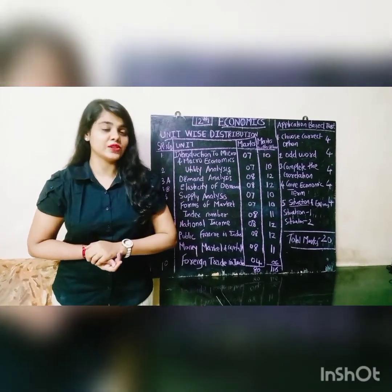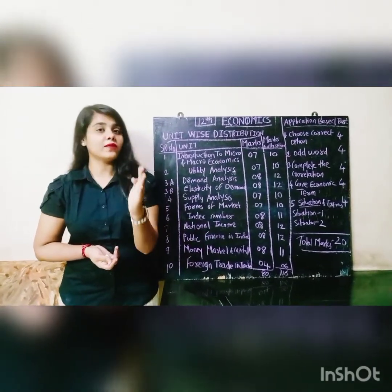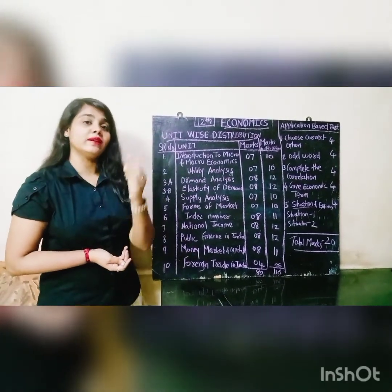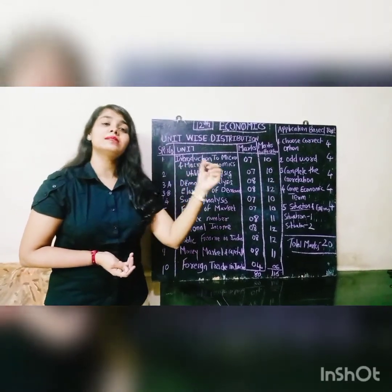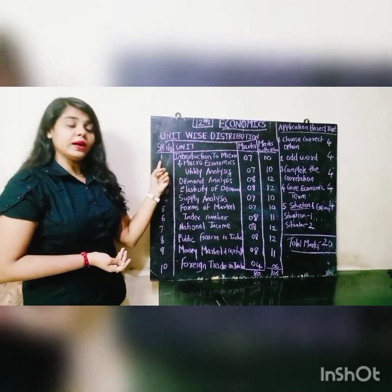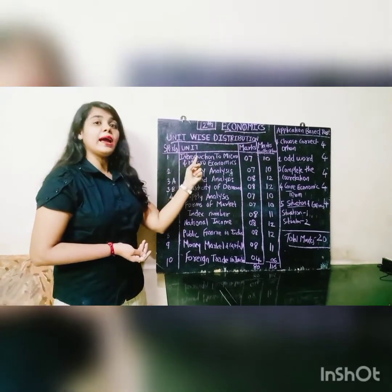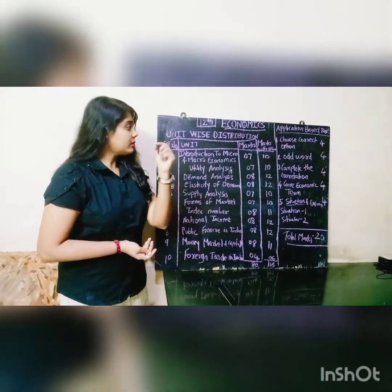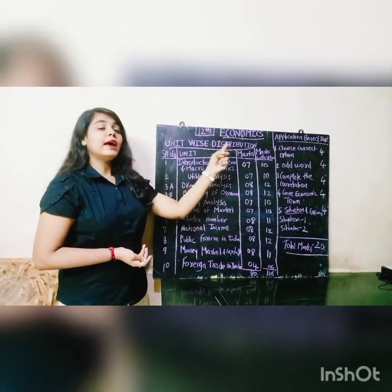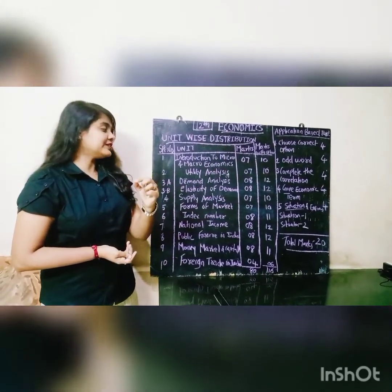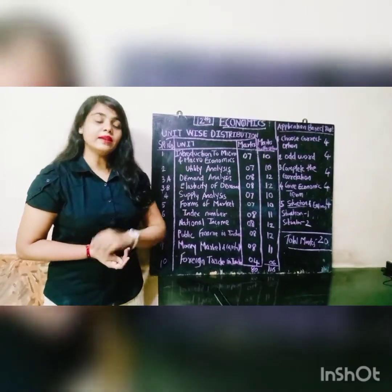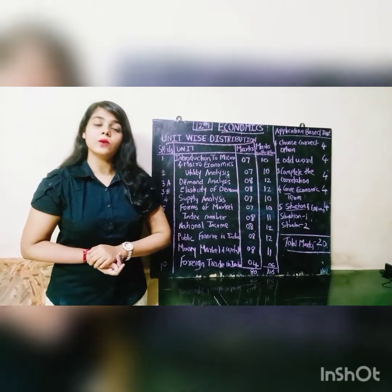So let's start with the discussion of the paper pattern of Economics. First, we will discuss the unit-wise marks distribution of the chapters. Chapter number one — Introduction to Micro and Macro Economics — has compulsory marks of seven and marks with options are ten. Chapter number two — Utility Analysis — similarly has compulsory seven marks and marks with options are ten.